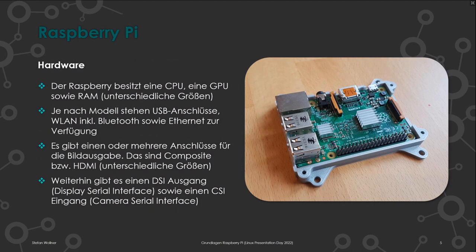Es gibt einen DSI-Ausgang – das ist das Display Serial Interface. Die Raspberry Pi Foundation bietet dafür auch einen Bildschirm an, den man wie bei einem Laptop mit einem Flachbandkabel anbinden kann. Außerdem gibt es einen CSI-Eingang – das Camera Serial Interface – um eine Kamera anzuschließen und Bilddaten zu empfangen. Die Raspberry Pi Foundation bietet verschiedene Kameramodelle an, von Modell 1 und 2 bis zu einem hochauflösenden Sensor.